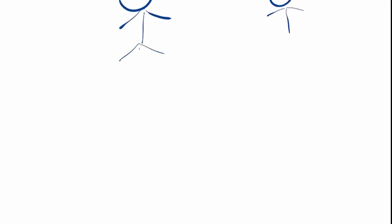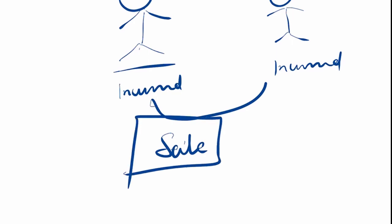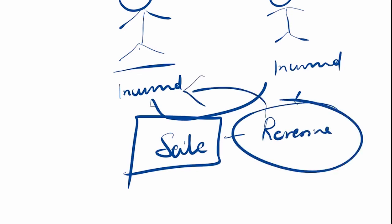Now how does the entire concept of joint venture work? A and B are the two parties. A would have incurred some expenses. Finally a sale happens. The profit will be whatever the revenue is, reduced by expenses incurred by A and B — that becomes the profit of the venture.